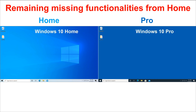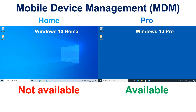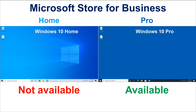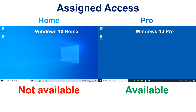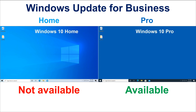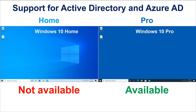The remaining functions available only on Windows 10 Pro — which you most likely will never need at home — are: first, Mobile Device Management, to manage Windows 10 remotely; second, Enterprise State Roaming with Azure, which provides a unified experience for users who change devices across the enterprise; third, Microsoft Store for Business, to distribute custom applications; fourth, Assigned Access, to tailor the Windows 10 device to each logged-in user; fifth, Dynamic Provisioning, to facilitate auto-configuration for out-of-box PCs; sixth, Windows Update for Business, to manage update rollouts; and finally, support for Active Directory and Azure Active Directory, to assign the Windows 10 device to be managed dynamically.